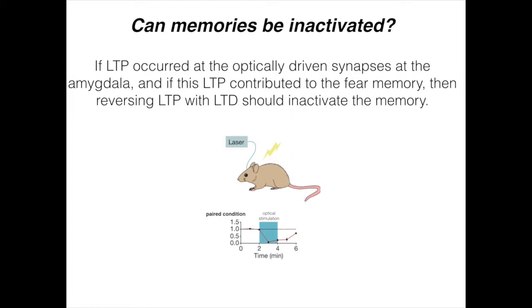In other words, if long-term potentiation occurred at the optically driven synapses of the amygdala, as they just showed, and if this long-term potentiation really contributed to the fear memory, then reversing the long-term potentiation with long-term depression should inactivate the memory.